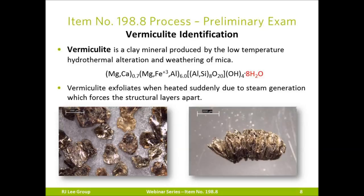Vermiculite is a clay mineral produced by low-temperature hydrothermal alteration and weathering of mica. Its formula illustrates that it has eight water molecules in its structure. When heated rapidly to 300°C, it exfoliates or expands due to steam generation, which forces the layers apart. Exfoliation can expand vermiculite up to 30 times its original thickness. Exfoliated vermiculite has very low density and provides excellent insulation, which is one of the reasons it is used in vermiculite spray-on fireproofing.